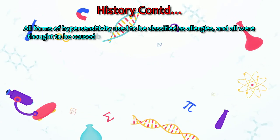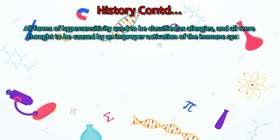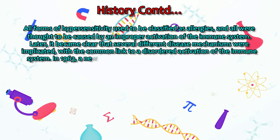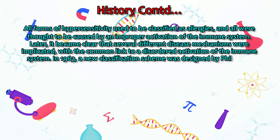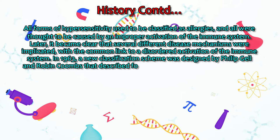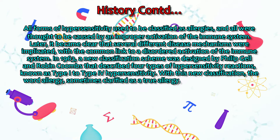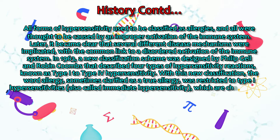All forms of hypersensitivity used to be classified as allergies, and all were thought to be caused by an improper activation of the immune system. Later, it became clear that several different disease mechanisms were implicated, with a common link to a disordered activation of the immune system. In 1963, a new classification scheme was designed by Philip Gell and Robin Coombs that described four types of hypersensitivity reactions, known as type 1 to type 4 hypersensitivity. With this new classification, the word allergy — sometimes clarified as a 'true allergy' — was restricted to type 1 hypersensitivities, also called immediate hypersensitivity, which are characterized as rapidly developing reactions involving IgE antibodies.